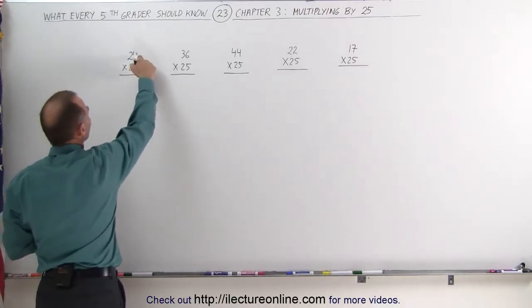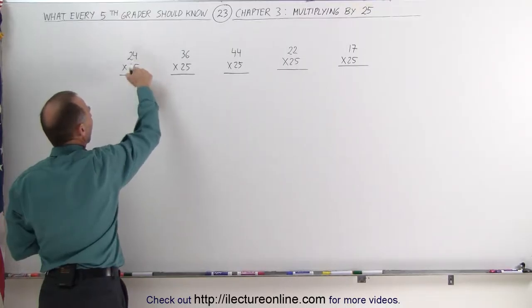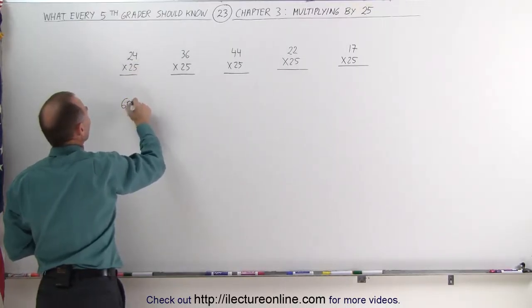So take the number 24, divide it by 4, you get 6, add two zeros, the answer is 600.